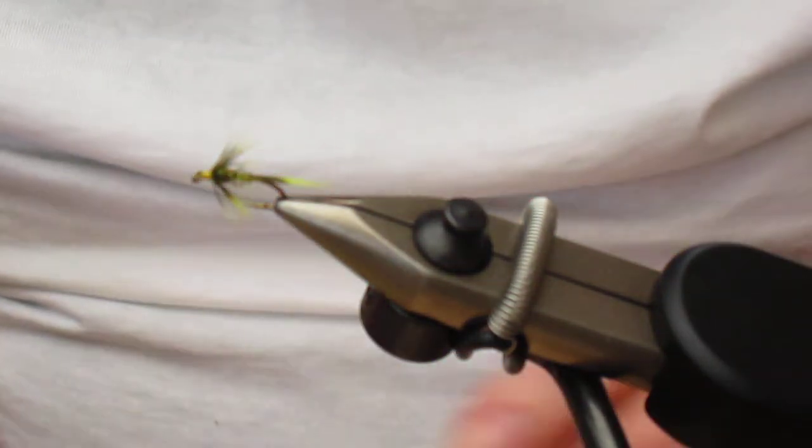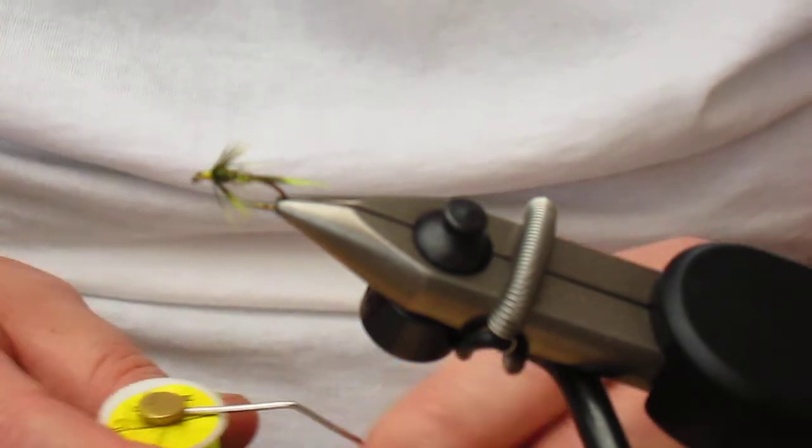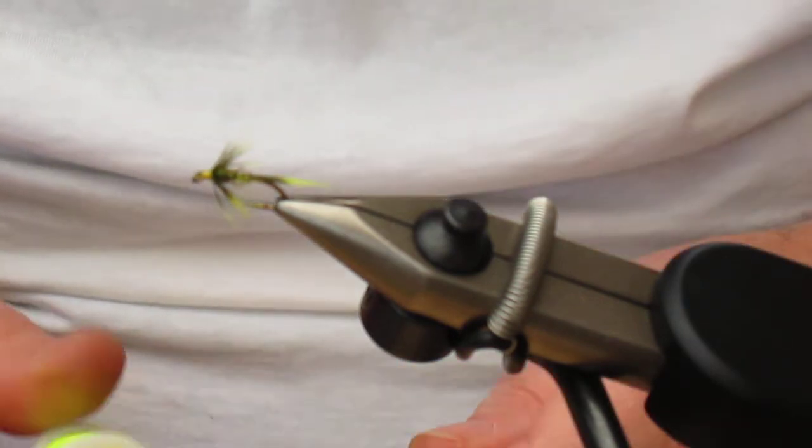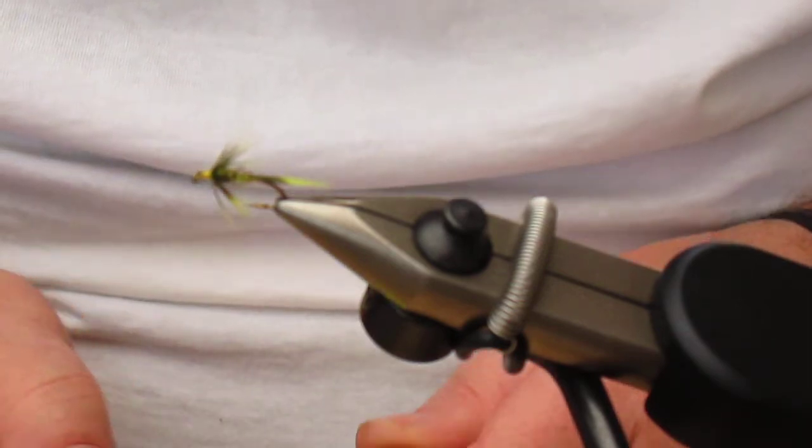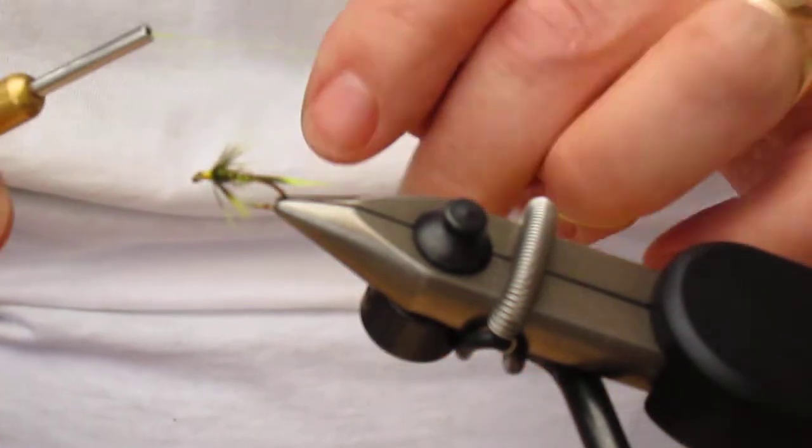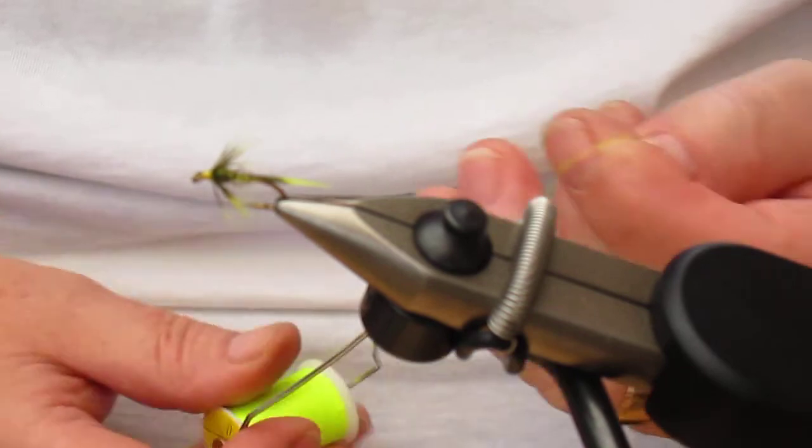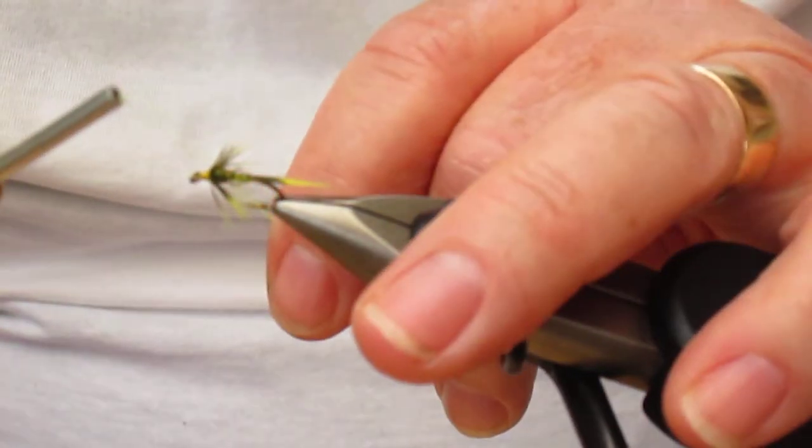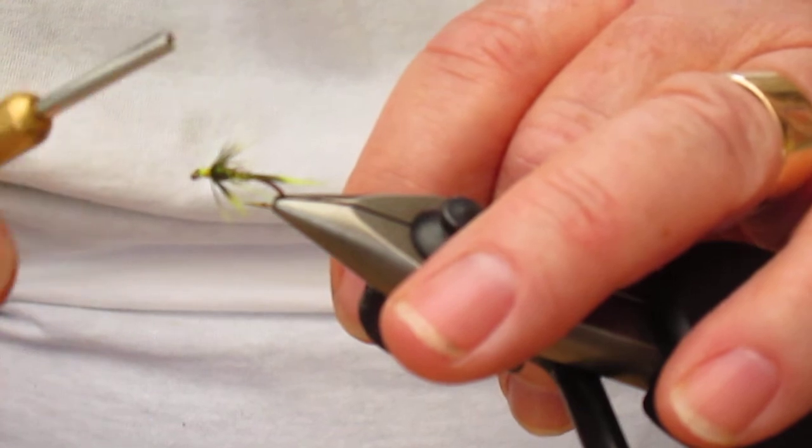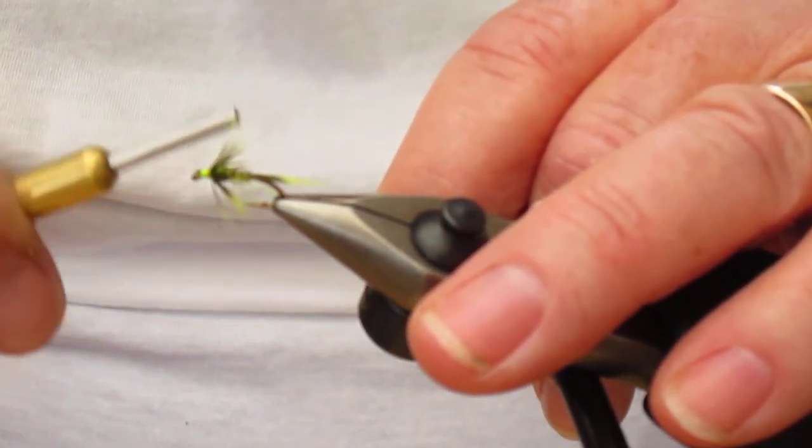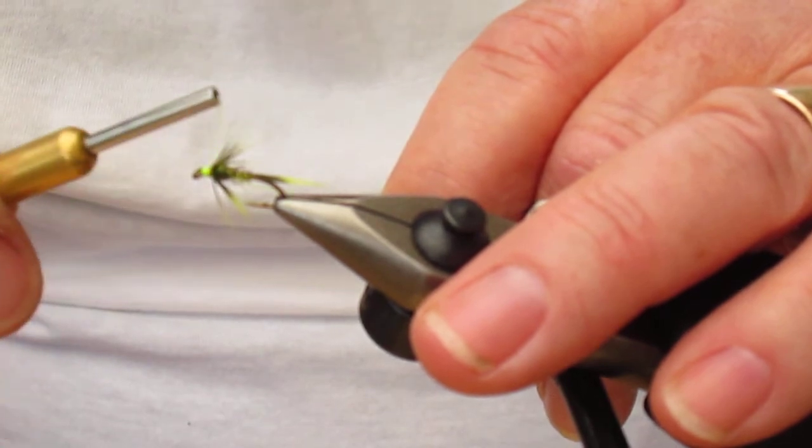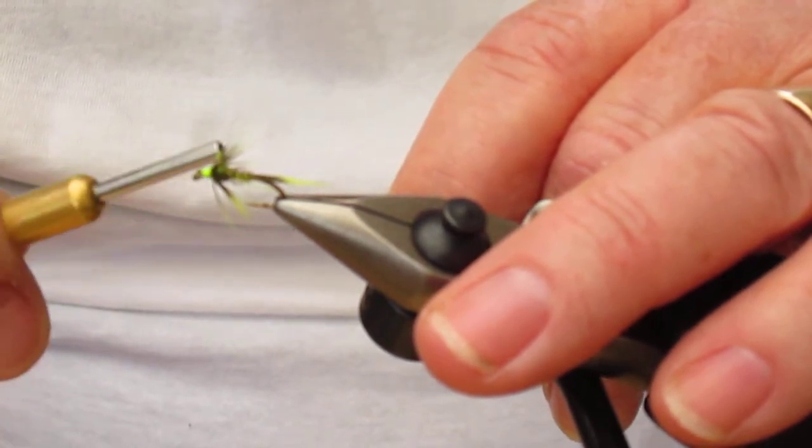Now we've got some glow bright floss, glow bright 11. I've got it in the bobbin holder, so we're actually going to attach that as we would the thread. And you may have guessed already, the coloration of the fly actually gave it its name.